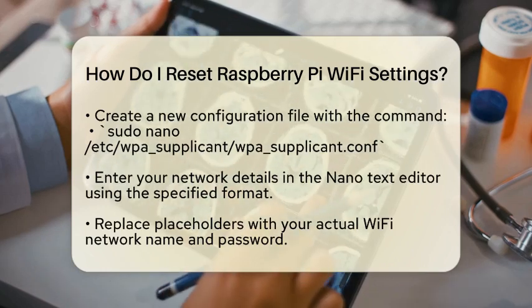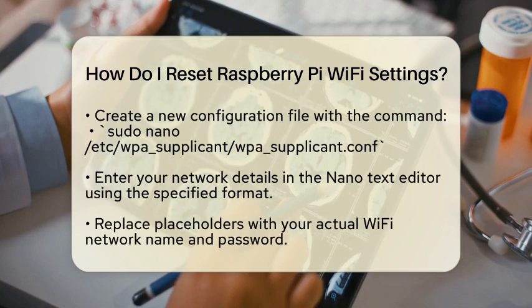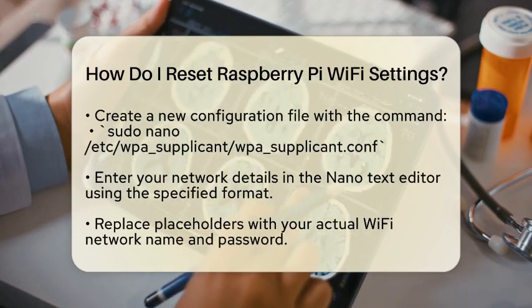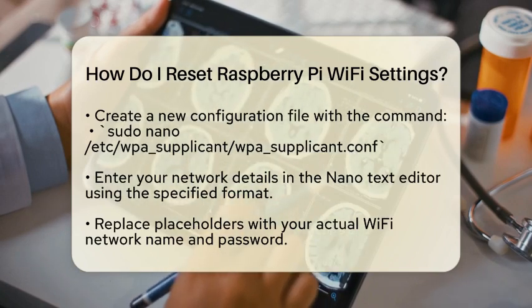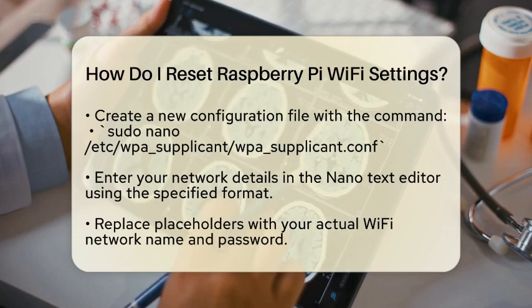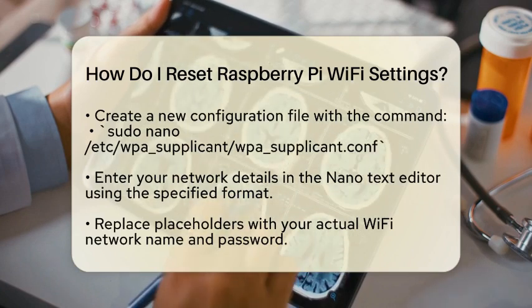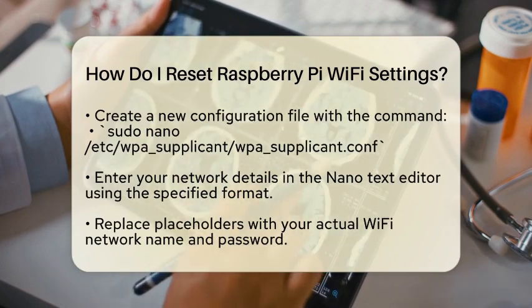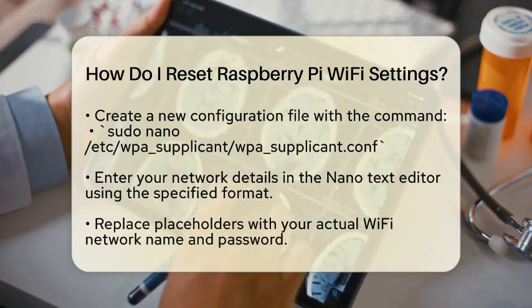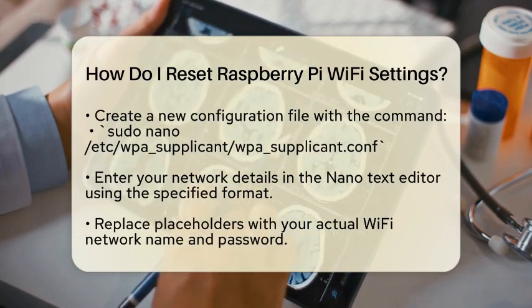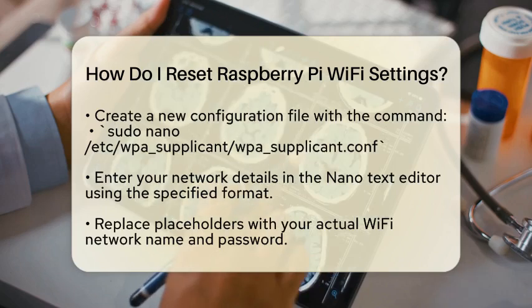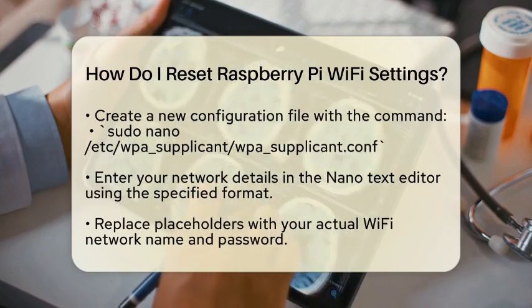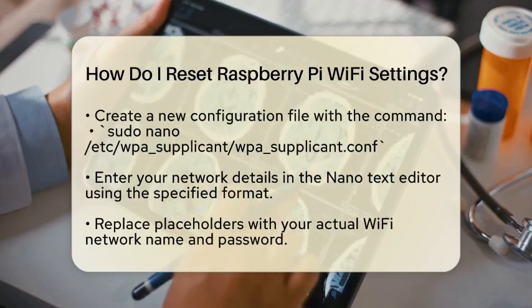After executing this command, you will need to create a new configuration file to set up your Wi-Fi connection again. You can do this by typing: sudo nano /etc/wpa_supplicant/wpa_supplicant.conf. This will open the nano text editor.